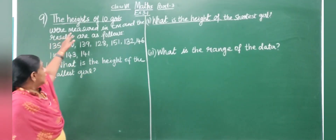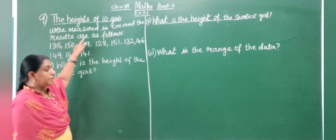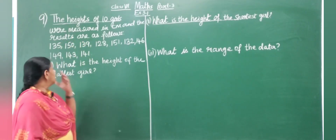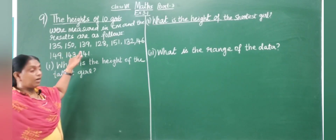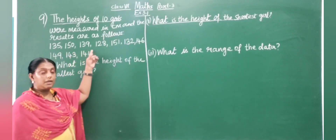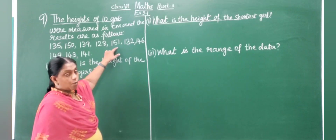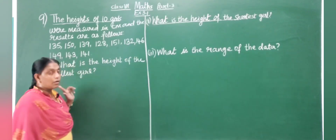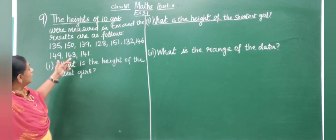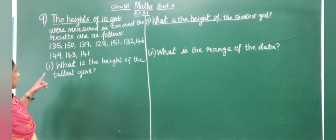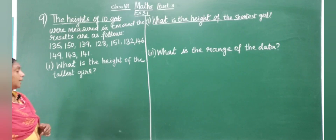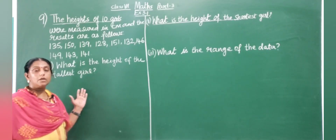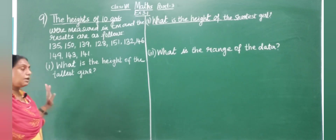The height of 10 girls were measured in centimetres and the results are: 135, 150, 139, 128, 151, 132, 146, 149, 143, and 141. Find the height of the tallest girl. Before finding it, we will arrange in ascending order.